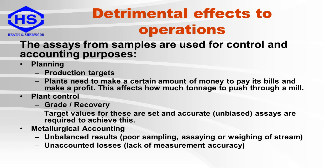Here are some of the detrimental effects to operations of biased results. Assays from samples are used for process control and accounting purposes. For planning, production targets need to be met — plants need to make a certain amount of money to pay bills and make profits, which affects how much tonnage to push through a mill. At the plant control level, grade and recoveries are important, and accurate unbiased assay results are required to achieve targets. For metallurgical accounting, poor sampling, assaying, or weighing of streams can lead to unbalanced results.